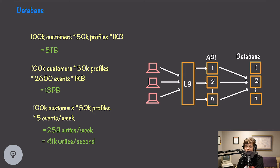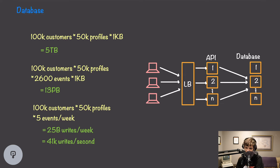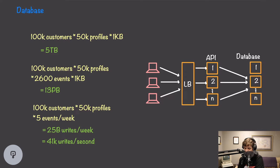We can use hashing so that multiple customers are stored on one database node, and we don't need 100,000 nodes for 100,000 customers. This lets us scale the number of database nodes independently from the number of customers. Customer ID also has high cardinality — there are many customer ID values — which means data will be statistically well-distributed across nodes, with similar numbers of large and small customers on each node. High cardinality is an important characteristic to look for when choosing a shard key.